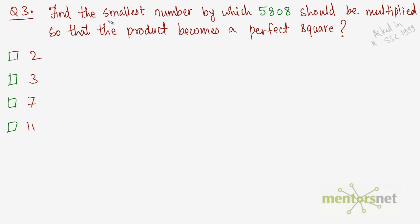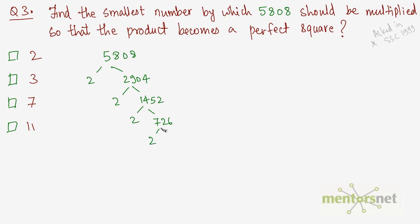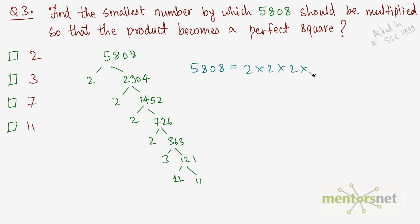Question 3: find the smallest number by which 5808 should be multiplied so that the product becomes a perfect square. First, express 5808 as a product of prime factors. Dividing by 2 repeatedly gives 2904, 1452, 726, 363. Then 363 ÷ 3 = 121, and 121 = 11 × 11. So 5808 = 2⁴ × 2² × 3 × 11², i.e., 2 × 2 × 2 × 2 × 2 × 2 × 3 × 11 × 11.